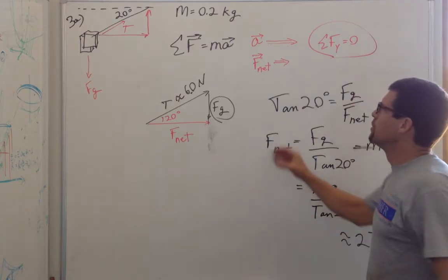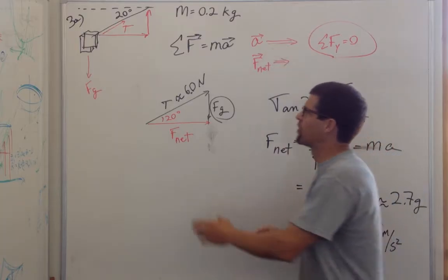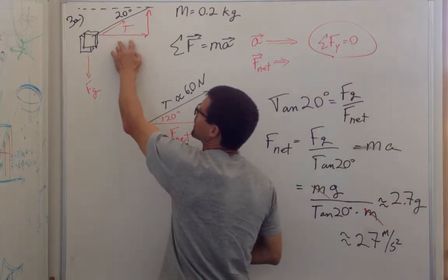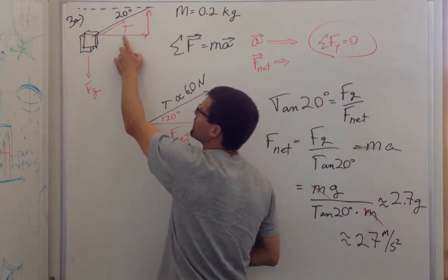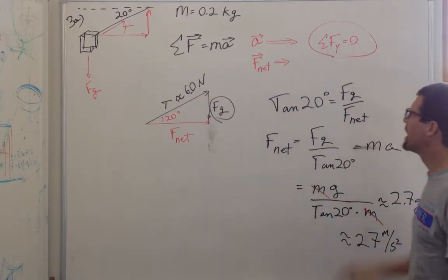If you wanted to, you could say the sum of the forces in the x direction is mass times acceleration in the x direction. And then the only force in the x direction is the horizontal component of the tension. And the sum of the forces in the y direction are zero, and you solve those two equations.